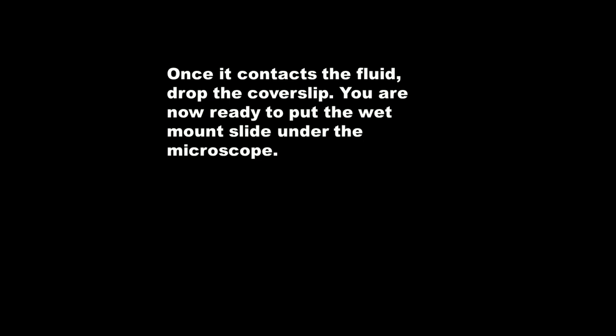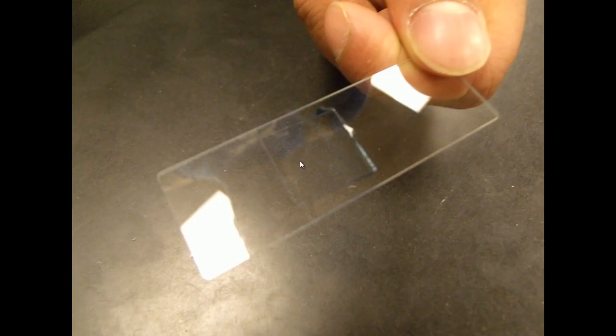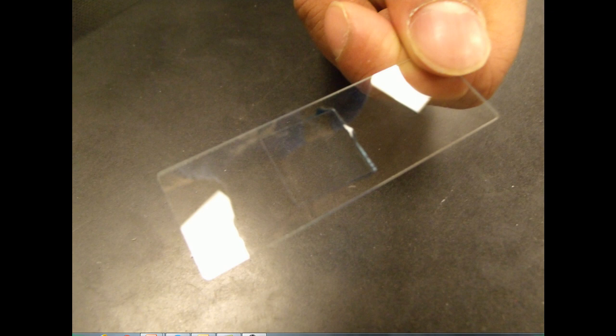You're now ready to put the wet mount slide under the microscope and you can see there's a very thin layer of blue fluid under the cover slip which will give you a good tissue sample.